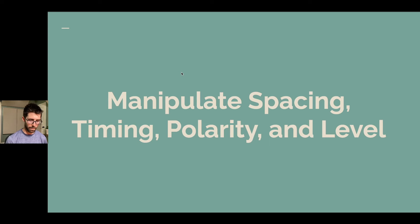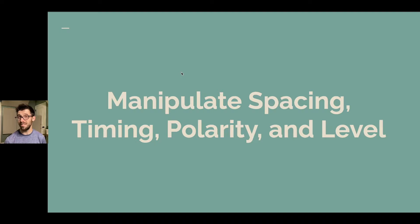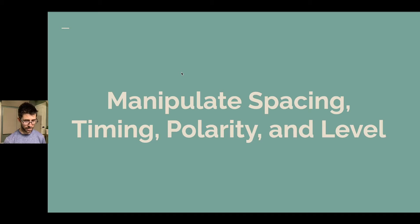How do cardioid subs work? There are four main things we can manipulate: spacing, timing — which are linked — but you can also add digital or virtual delay to an output. We can change the polarity of a subwoofer and its level relative to other subwoofers. A caveat here is that there are single-enclosure cardioid sub designs that have this whole recipe built into one box, but most of the time I'm using multiple enclosures to make it happen.